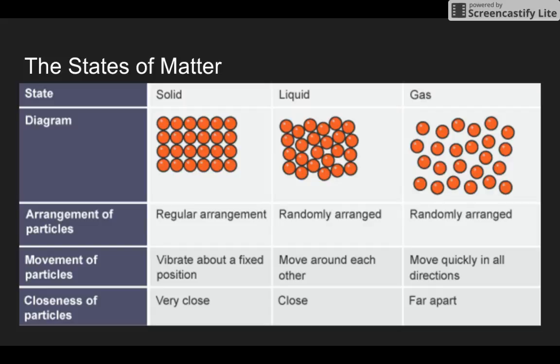Liquids, though, they take the shape of whatever container they're in because their particles are randomly arranged and they can move around each other. So they just kind of flow and take up whatever shape container they're in. But they do have a fixed volume. We can measure the volume of a liquid. We do that with graduated cylinders, or beakers, or any other liquid measuring device.